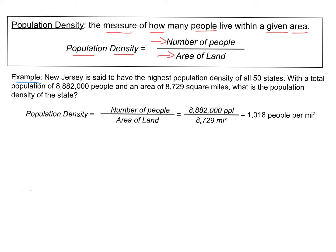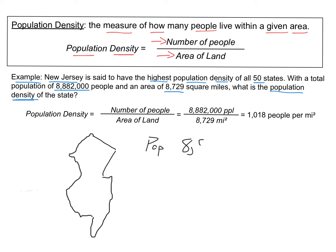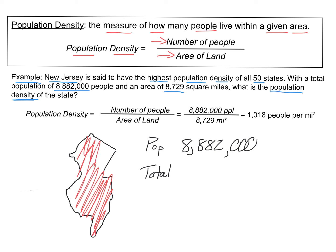Let's take a look at this first example. New Jersey is the most densely populated state out of all 50 states. It has a total population of over 8 million people and an area of over 8,000 square miles. I want to figure out what exactly is the population density. The total population is 8,882,000 people, and the total area of the state of New Jersey is 8,729 miles squared.